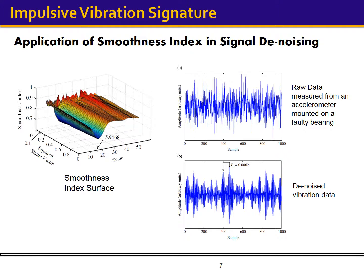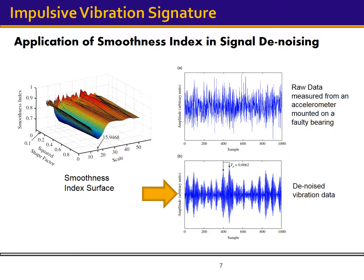The figure on the left shows the smoothness index value as a function of filter parameters. The parameters that minimize the index are used to extract a fault signature. The figure on the top right shows the raw signal measured from a defective bearing, and the figure on the bottom right shows the extracted fault signature.